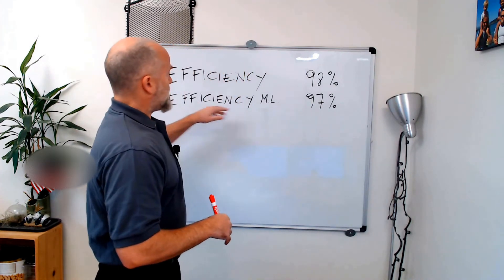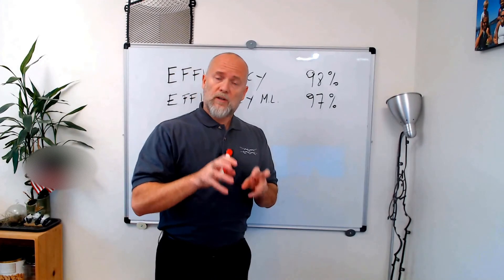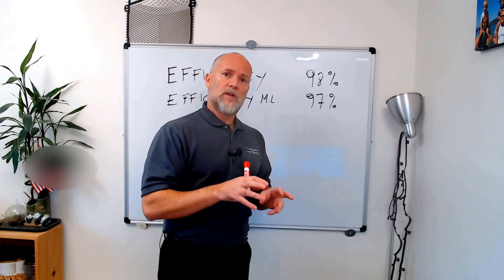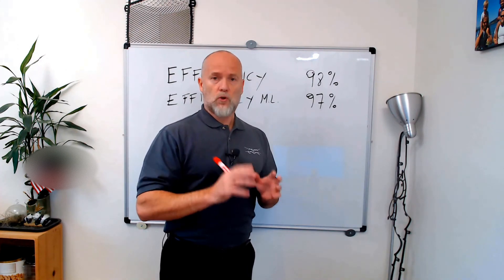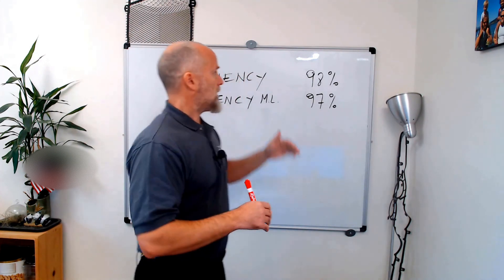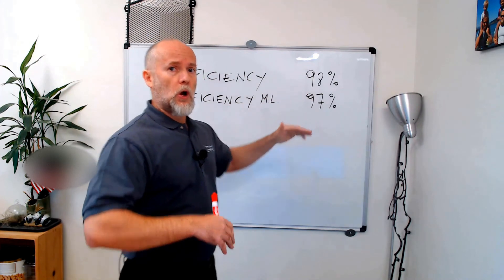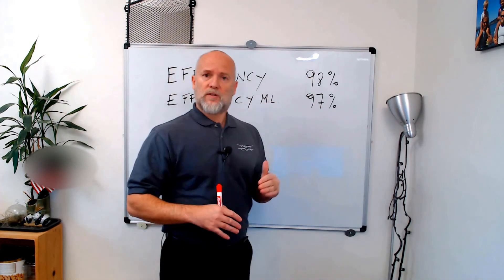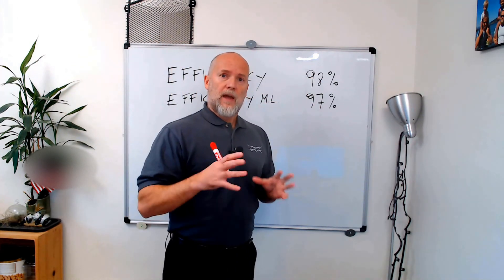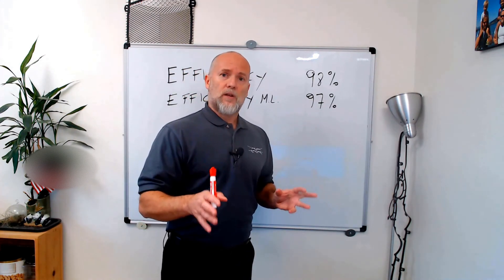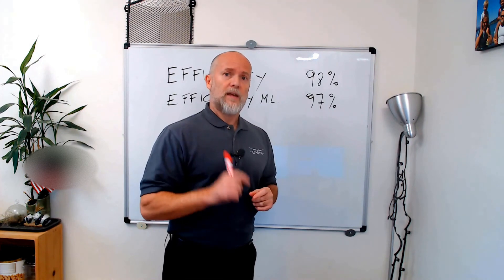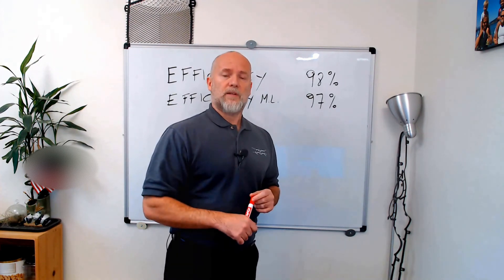The efficiency machine learning is the current efficiency of your heat exchanger compared to the efficiency that the heat exchanger had when it was new, so clean. The algorithm compares these two efficiencies all the time and when they go below a certain threshold, it actually activates an alarm and it tells you that that is the right time to run a CIP cycle.